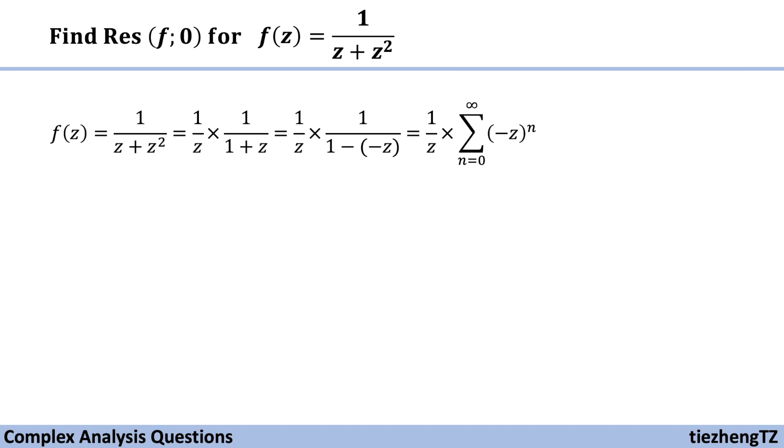After a little bit of optimization, the function in series format is sum from n = 0 to infinity of (-1)ⁿ times zⁿ⁻¹.